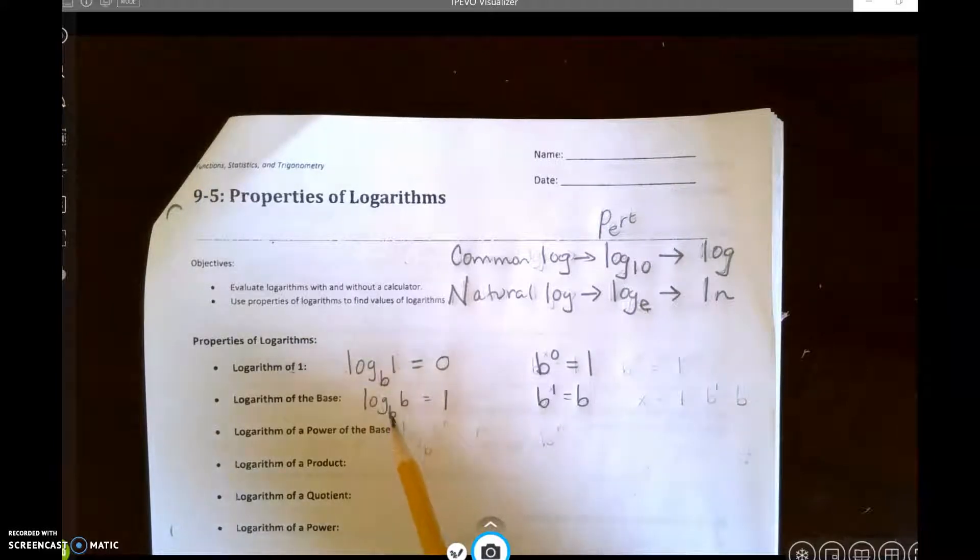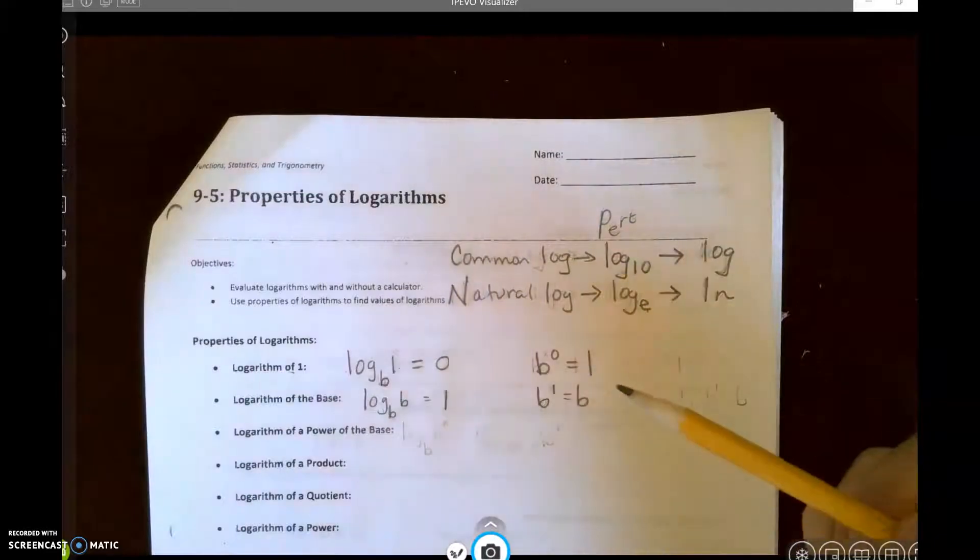So log base 10 of 10 is 1, log base 12 of 12 is 1, log base 50 of 50 is 1. Because if the base and the answer are the same, it must have just been raised to the first power.